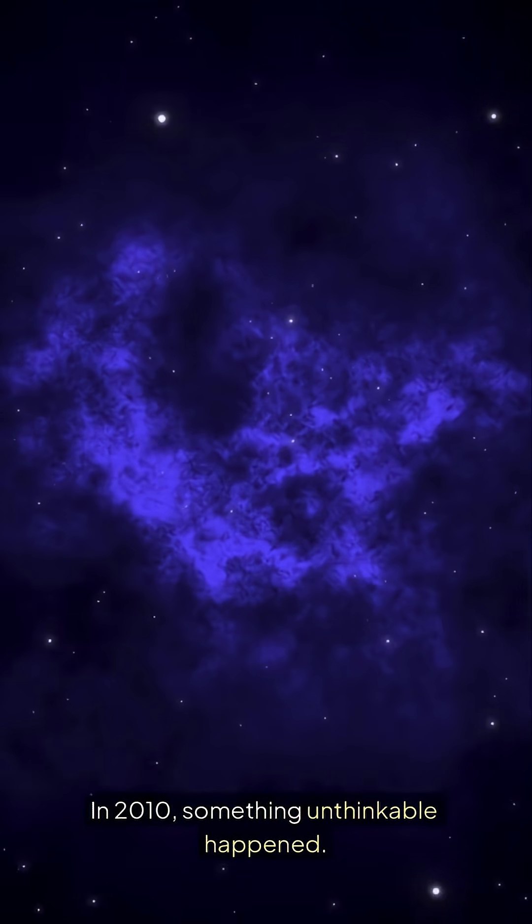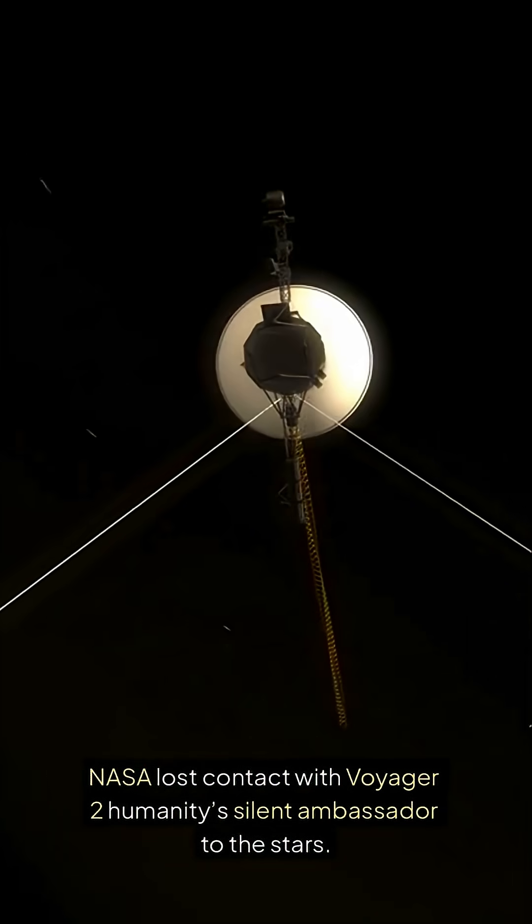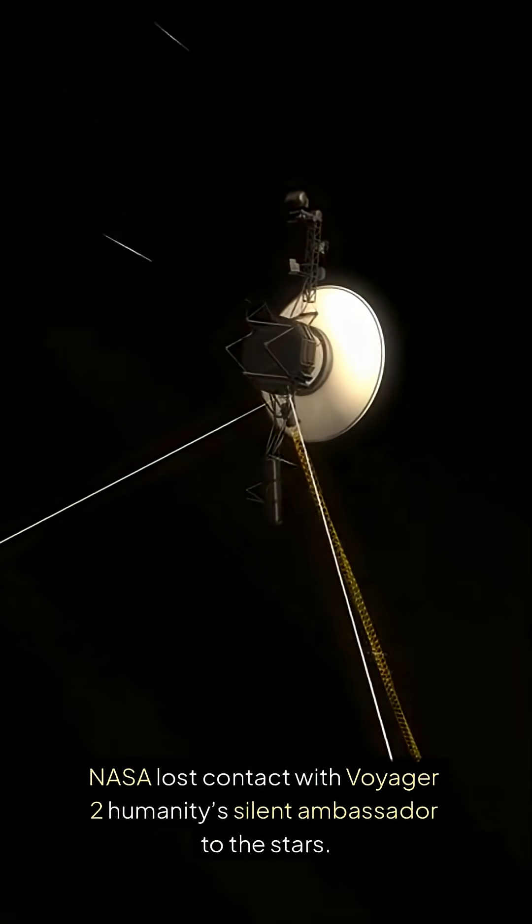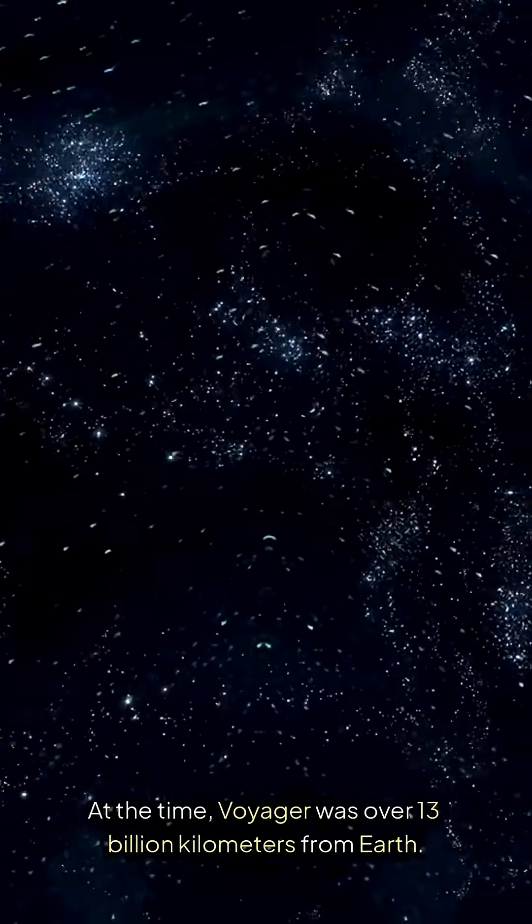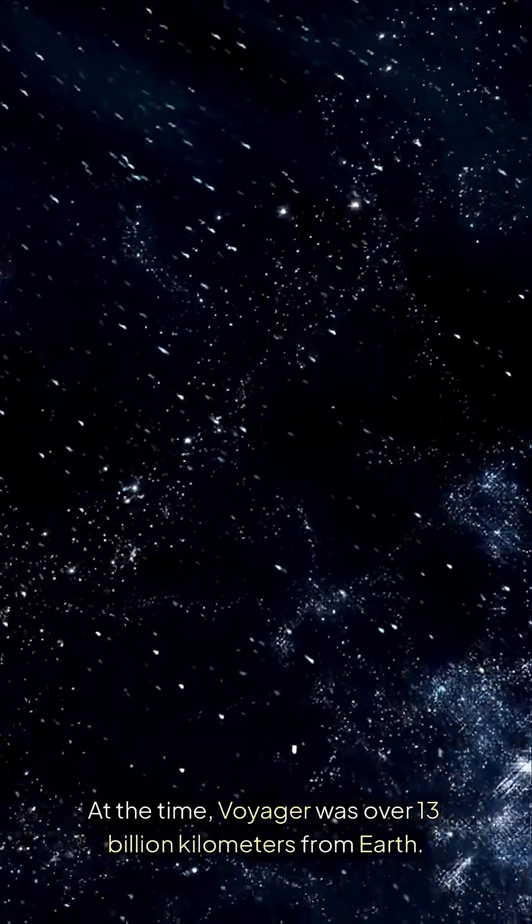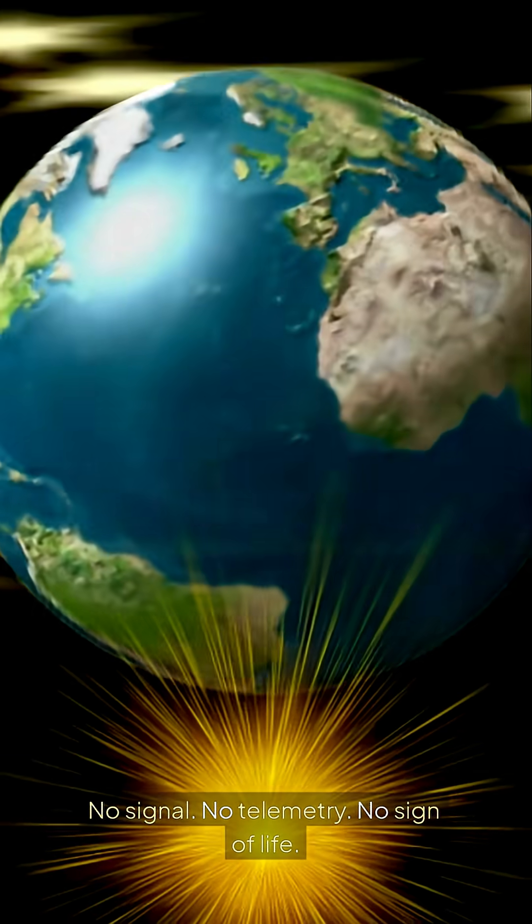In 2010, something unthinkable happened. NASA lost contact with Voyager 2, humanity's silent ambassador to the stars. At the time, Voyager was over 13 billion kilometers from Earth. Then out of nowhere it went completely silent. No signal, no telemetry.